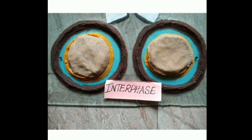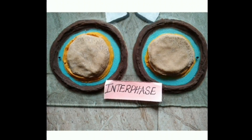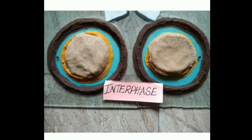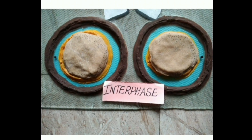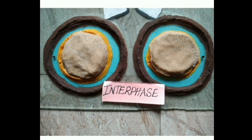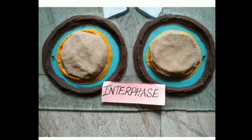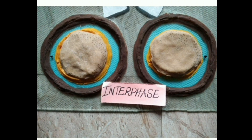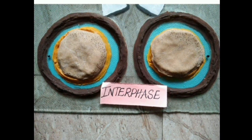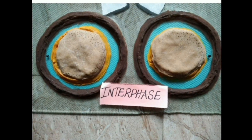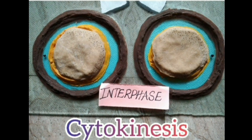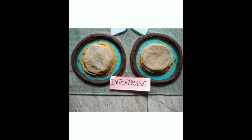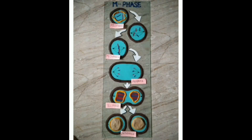Mitosis accomplishes not only the segregation of duplicated chromosomes into daughter nuclei, but the cell itself is divided into two daughter cells by the separation of cytoplasm, called cytokinesis. At the end of cytokinesis, the cell division is completed.